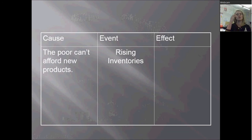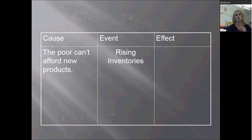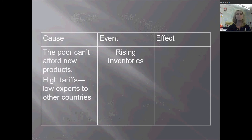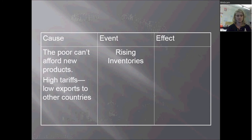Take businesses like Ford — Ford keeps making cars, but as the 20s progress, fewer and fewer people are buying those cars. They're not slowing production; they keep making the same number, maybe even increasing production. But because people are losing jobs and wages are low, people can't afford to buy these new things. Basically the storeroom at the Ford warehouse has more cars than they can sell. We also have high tariffs, meaning it's too expensive for other countries to buy our goods. So not only are our people not buying our goods, other countries are not buying them either. High tariff means low exports.